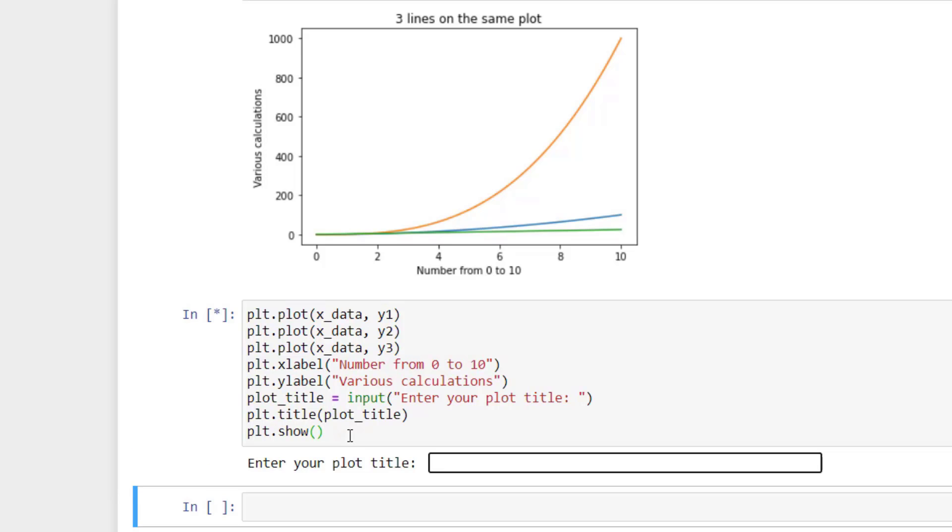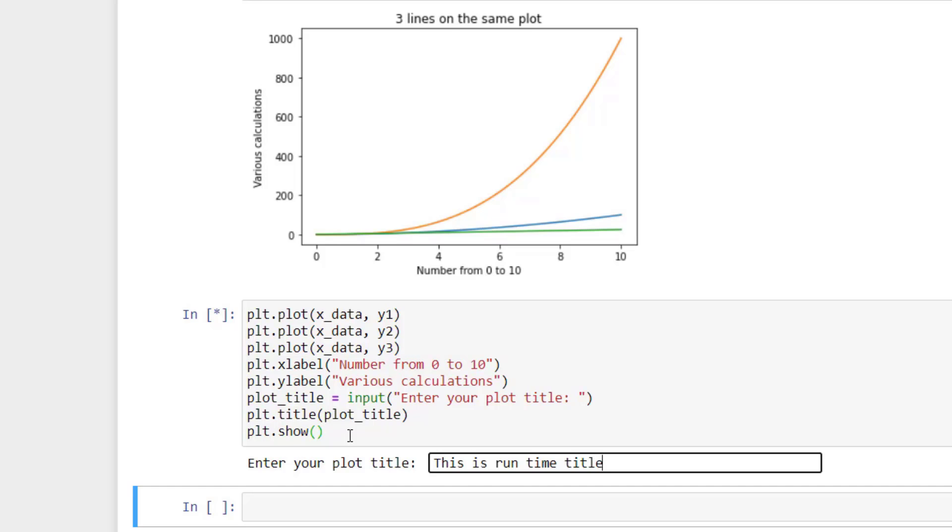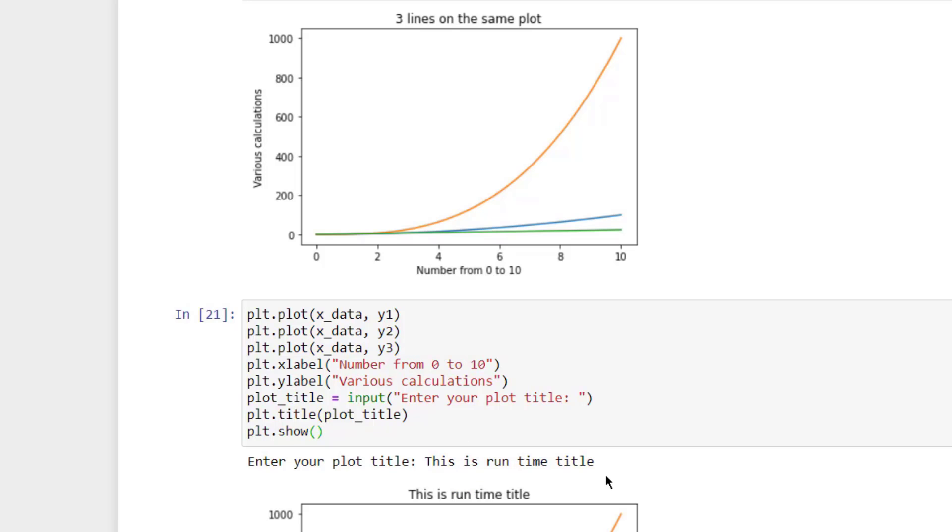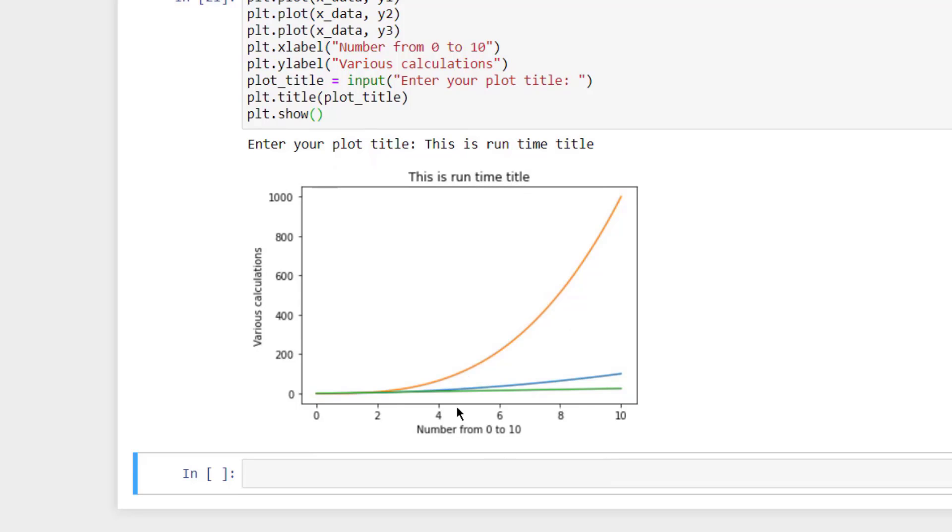I hope you understand and when we execute this cell, it asks for the title, let's say, this is runtimetitle. And hit enter. As you can see, the dynamic title is applied here. So this was just a bonus tip so that you can also apply the title during the run time. Now we will look at the legends.